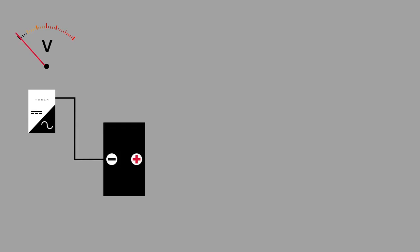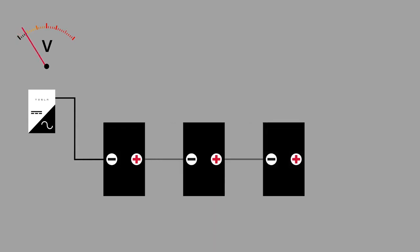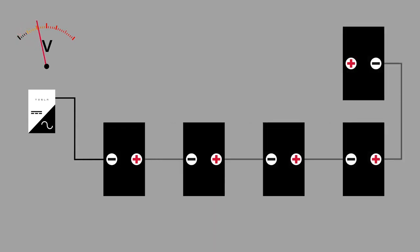In solar arrays, modules are installed in series. With each additional module, the overall voltage of the system increases.